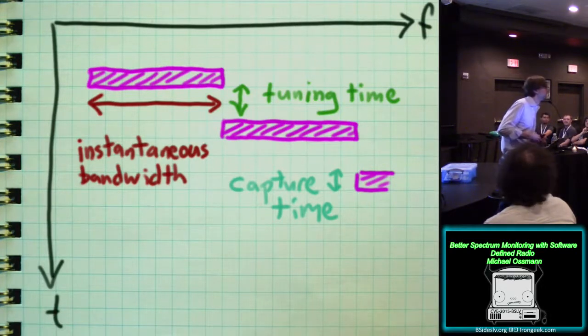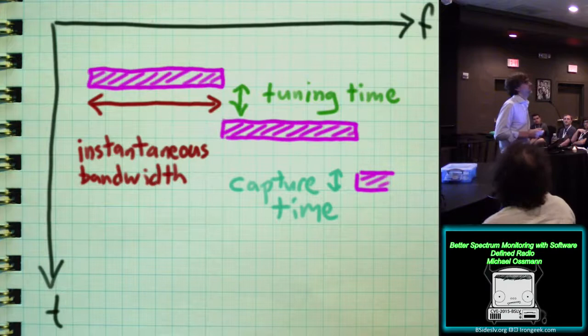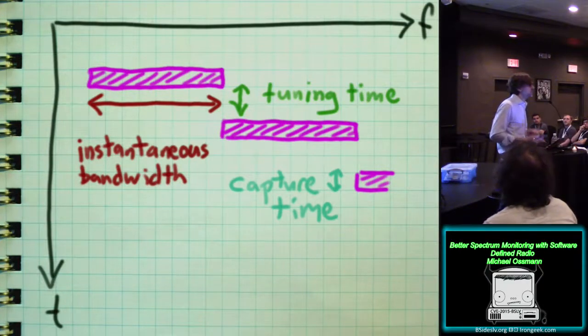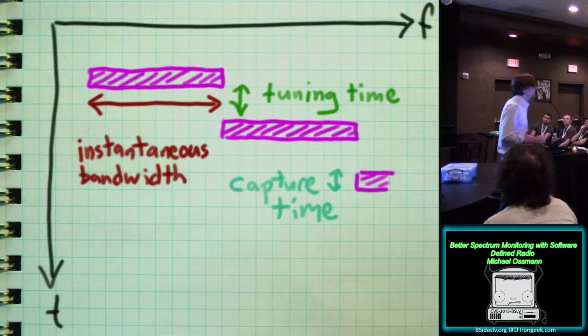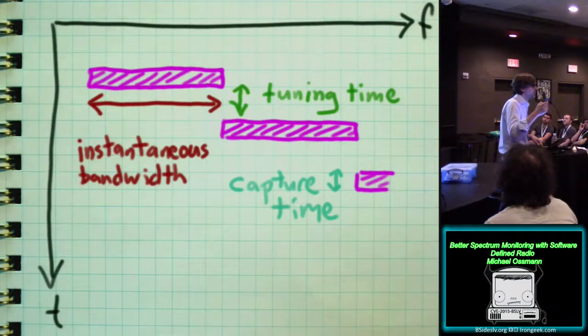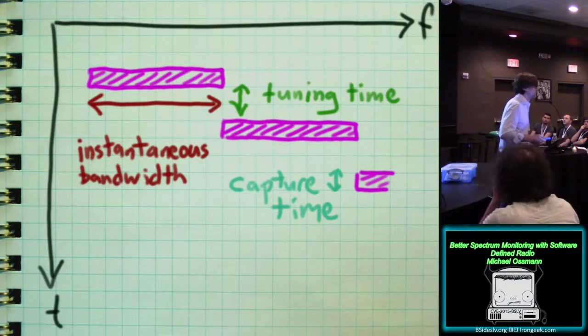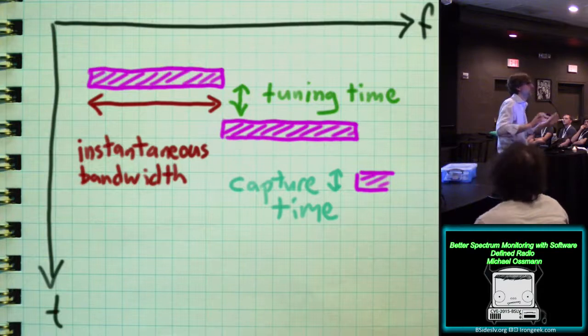If the tuning time is very long, then we're missing a lot of information that we could otherwise gather if we were able to tune faster. So tools like RTL Power and Osmocom Spectrum Sense are pretty neat, and they let us get very wide bandwidth over a very long period of time. But we may also be able to improve our ability to resolve or measure transient events if we're able to reduce that tuning time. So we have the instantaneous bandwidth, we have the capture time, and we have the tuning time. And those are the three things that affect what percentage of this big grid is covered by measurement. Question? Oh, good question. Yeah, these things are so low cost, why not use a whole bunch of them? That's a good idea.